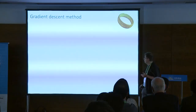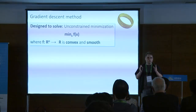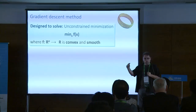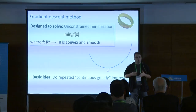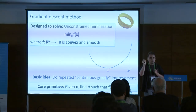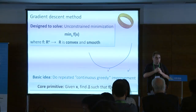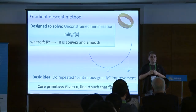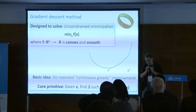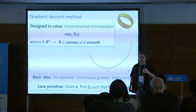Gradient descent is an algorithm designed to solve unconstrained minimization problems, where we have some convex, continuous function and we just want to find its minimum. The approach is essentially the most obvious way you would think about it: a continuous greedy strategy. You start with some initial point x0, then find a way to get a new better point x1, then x2, x3, so that each new point improves upon the previous one. Hopefully over time you will make enough progress to get a nearly optimal solution. The core primitive is a procedure that, given x, finds a displacement delta — a direction in which to move to make the function smaller.